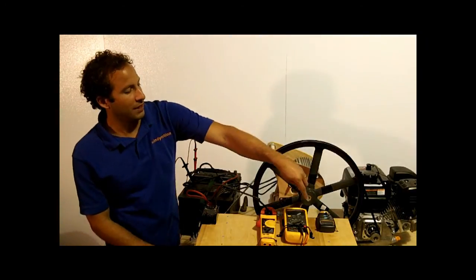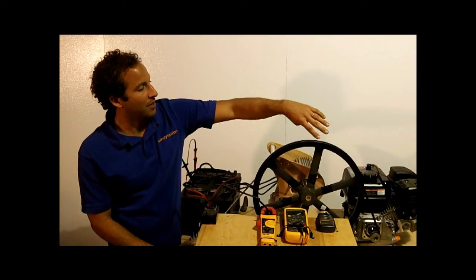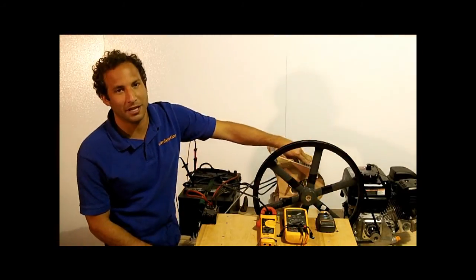So to start out with over here, we have a digital tachometer. This measures the RPM of the pulley, which is also the RPM of the Wintura 750.